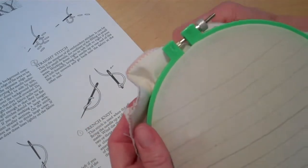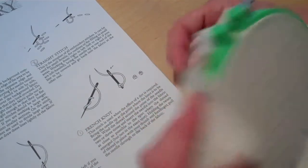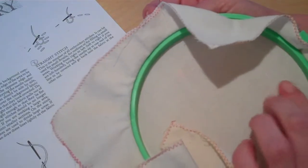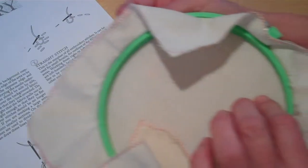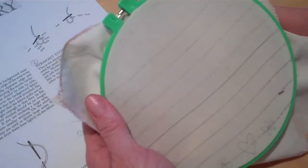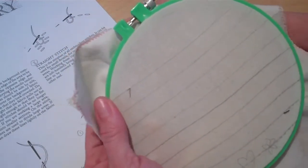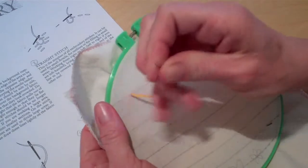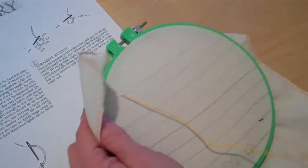In embroidery, you always bring everything up from the bottom, so you start underneath. I always keep my hand here to feel what's going on underneath the hoop, as well as what's happening on the top. So to do the French knot, you bring it up through the bottom. You almost need three hands to do a French knot.